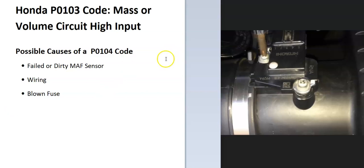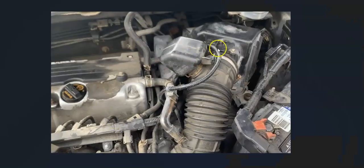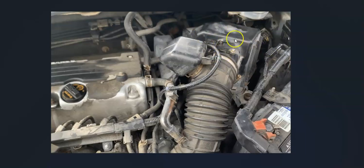The first thing to do is locate the MAF sensor on your particular Honda. It's usually easy to find — it'll be located right on the air intake box, typically a small sensor about one inch by two inches, positioned right after the air filter.